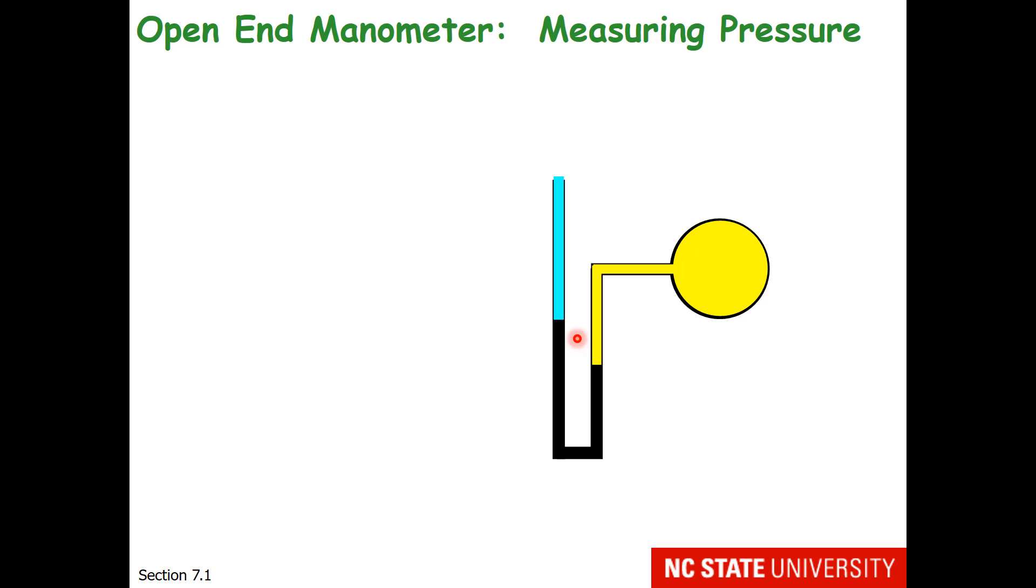In chemical experiments, often the pressure of gas is measured with an open-end manometer. So here we have a bulb full of some gas, and then it goes through a U-bend. And within this glass tube is mercury.